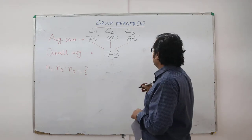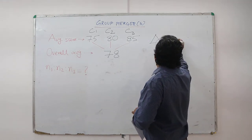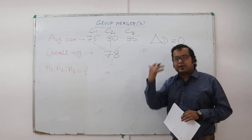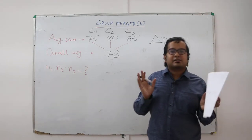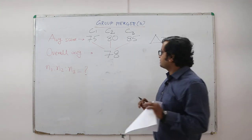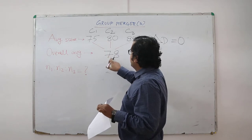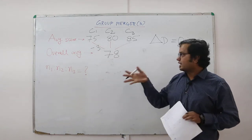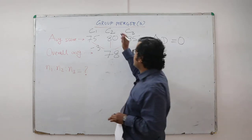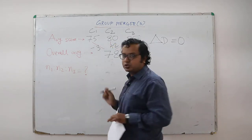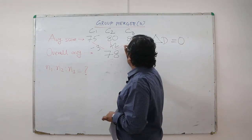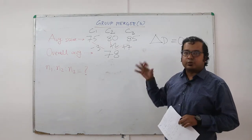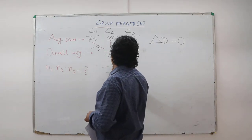The concept we use is: net deviation from the overall average is equal to zero. An individual value can be more or less, but the overall deviation should always be zero. C1 has average 75 versus overall 78, so deviation is minus three per student. C2 has deviation plus two per student. C3 has deviation plus seven per student.